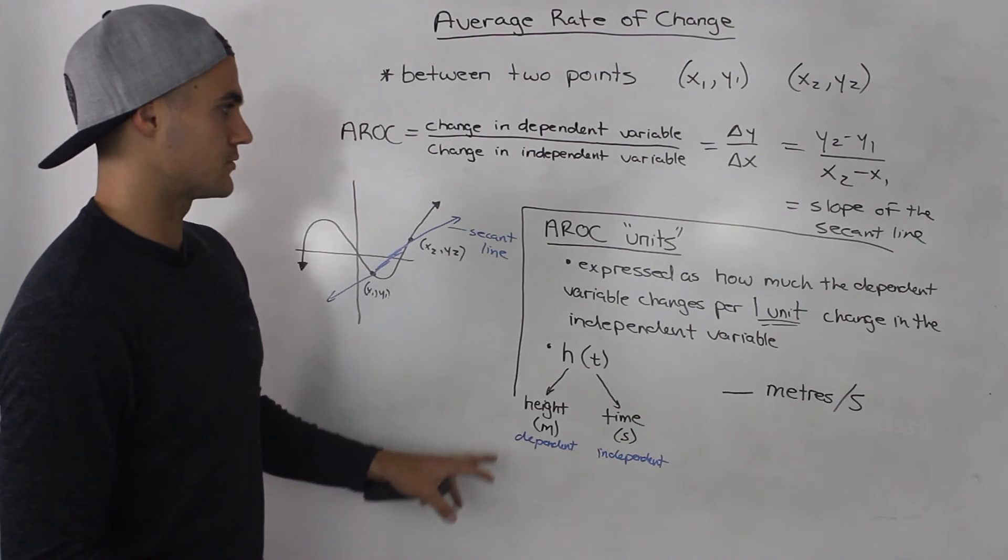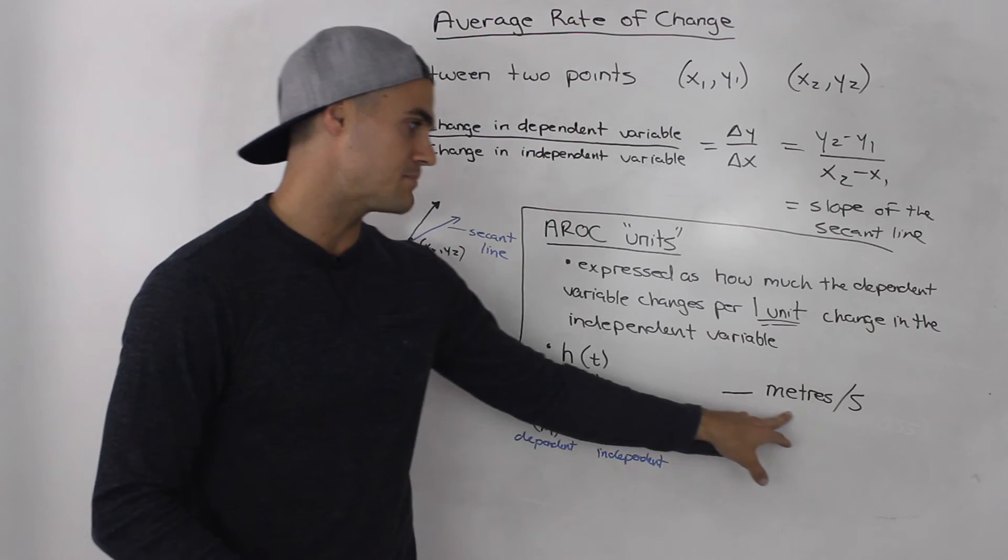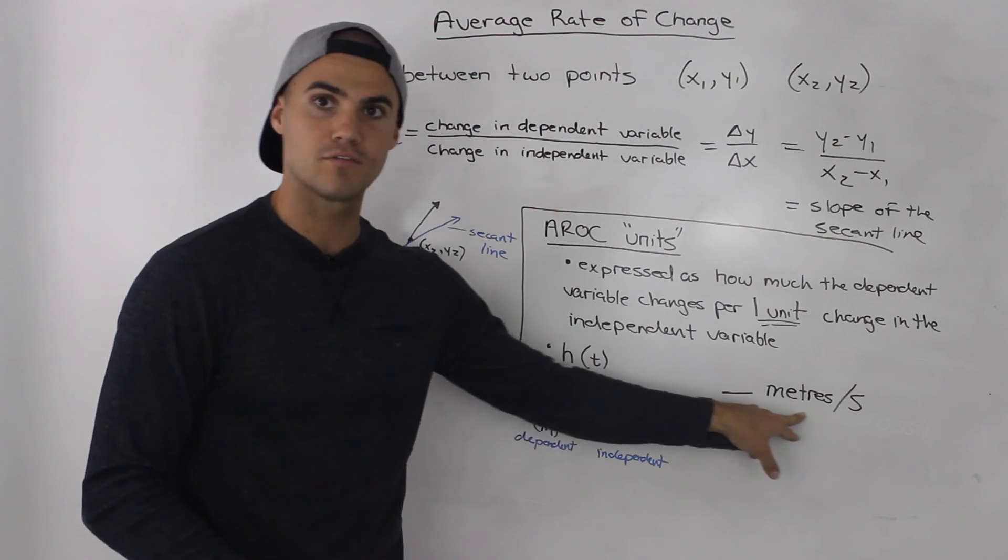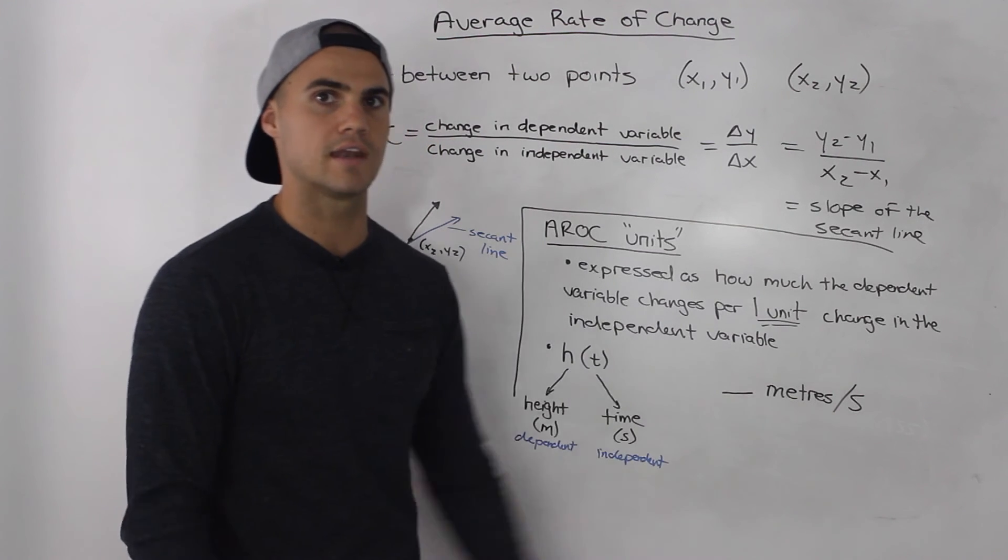Alright, so the units—the average rate of change is always measured in the dependent variable, some amount of the dependent variable, per one unit change in the independent variable.